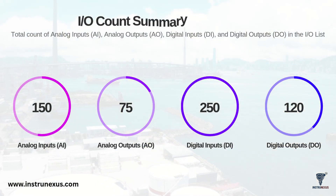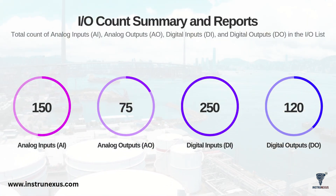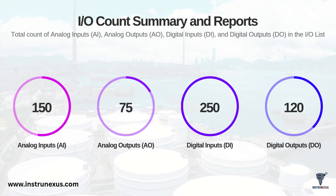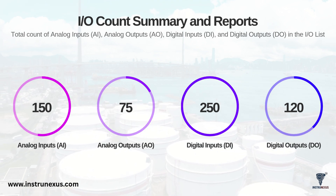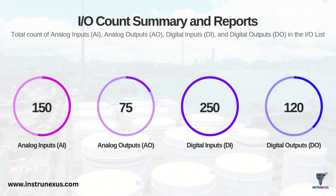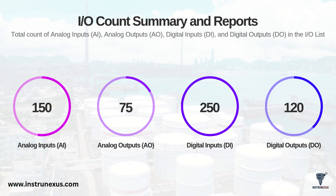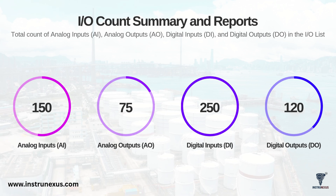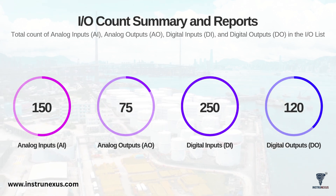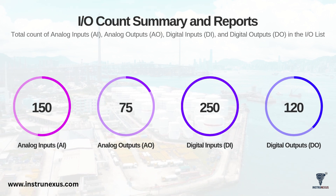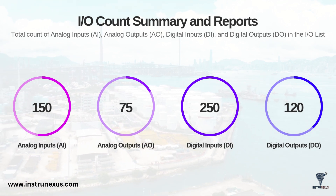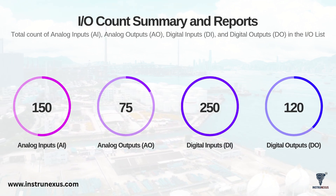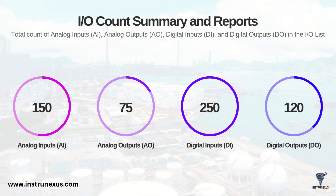One of the most important outputs of the IO List is the IO count summary. This is a high-level report showing the total count of each IO type – analog inputs, analog outputs, digital inputs and digital outputs. This summary – like the example shown here with 150 AIs and 250 DIs – is the primary input for hardware design and procurement. It tells the automation vendor exactly how many IO cards to purchase, how many DCS cabinets will be required, and how large the control system footprint will be. This summary is constantly tracked throughout the project as it directly impacts project cost and hardware engineering.